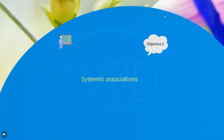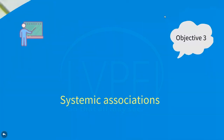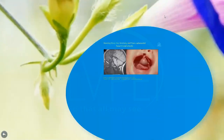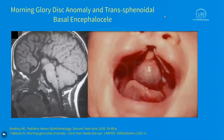Now let's see the systemic associations. The first is trans-sphenoidal basal encephalocele, which is a rare midline congenital malformation containing the chiasm and adjacent hypothalamus. It protrudes through a large round defect in the sphenoid bone and can protrude into the nasopharynx, causing airway obstruction.